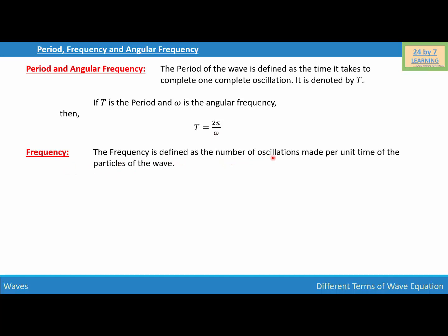Frequency is defined as the number of oscillations made per unit time of the particles of the wave. If T is the time period and ν is the frequency of the wave, then we can write frequency is equal to 1 over time period, which is ν = 1/T.